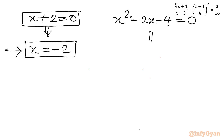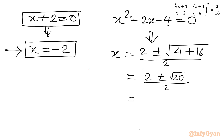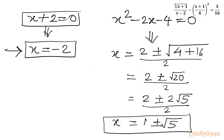For the quadratic x² - 2x - 4 = 0, applying the quadratic formula: x = (2 ± √(4 + 16)) / 2 = (2 ± √20) / 2 = (2 ± 2√5) / 2 = 1 ± √5. So we have three real solutions overall: x = -2, x = 1 + √5, and x = 1 - √5.